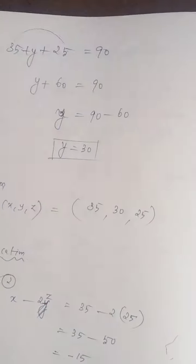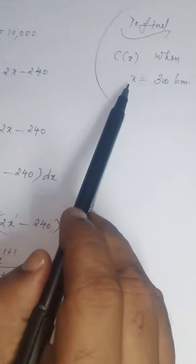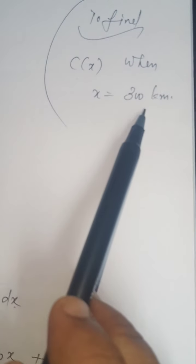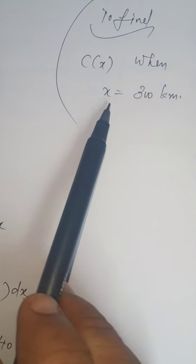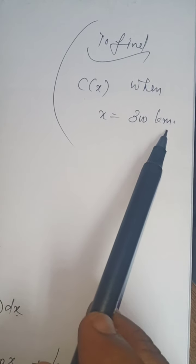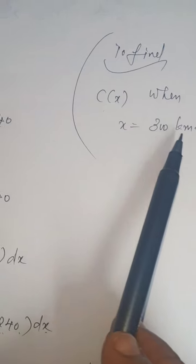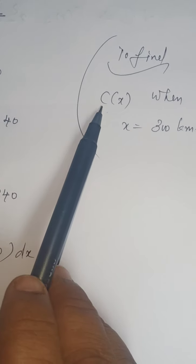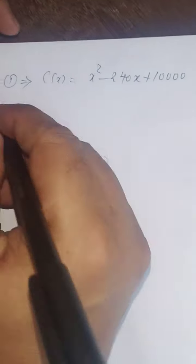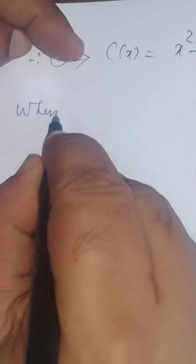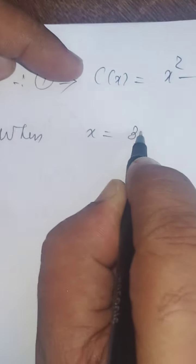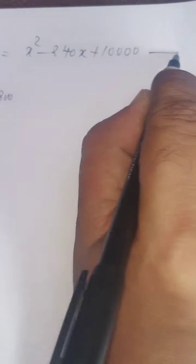Now, you are asked to find out the cost when X equals 300 kilometers. After overhauling, the engine has to run for 300 kilometers. If it runs for 300 kilometers, what will be the cost? That is the question. So, when X equals 300. Let it be number 2.